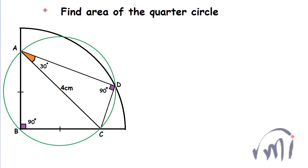This is the center of the circle — let us name this point O. Now I can draw the radii from the center to points D and B. So OB = OA = OD = OC, and all of them will be equal to half of AC, that is 2 centimeters each.